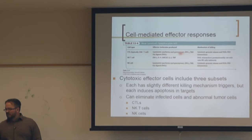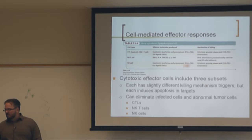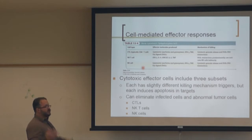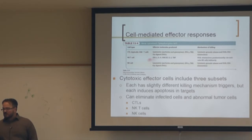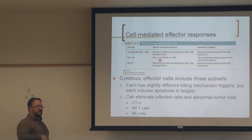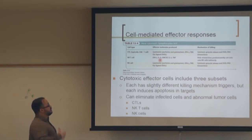CTLs kill through two mechanisms: FAS/FAS ligand interaction or perforins and granzymes — both inducing apoptosis. NK cells use identical killing mechanisms but target cells differently. NKT cells also secrete interferon gamma, which has antiviral effects, and IL-4, which drives B cells to class switch and start secreting IgG.